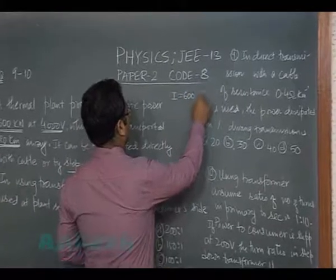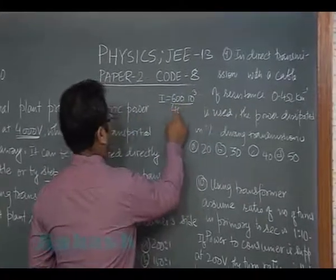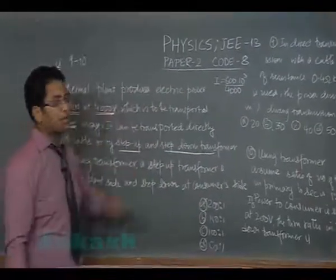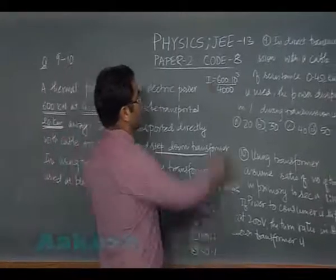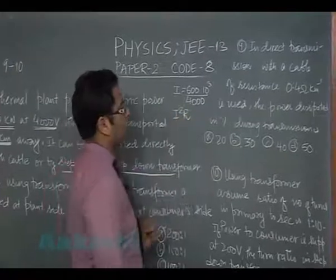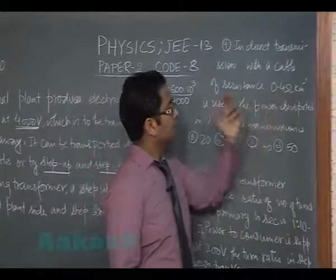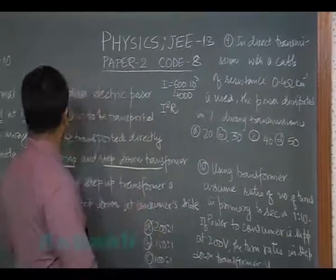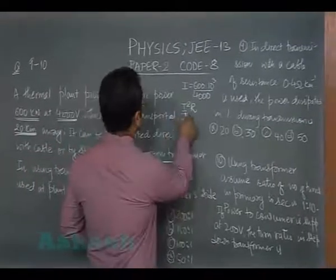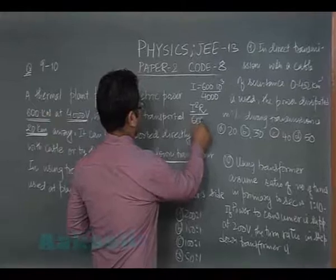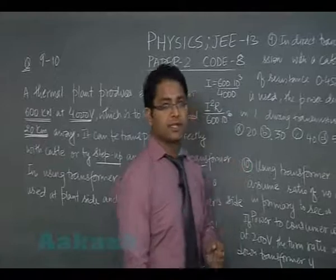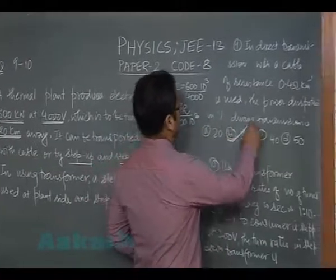That's 600 kilowatt by 4000 volt. This current will have a loss of I²R. R can easily be found out - the resistance per length is 0.4 ohm per kilometer and we have 20 kilometer length. So total loss divided by the original production 600×10³, on solving gives us 30 percent.